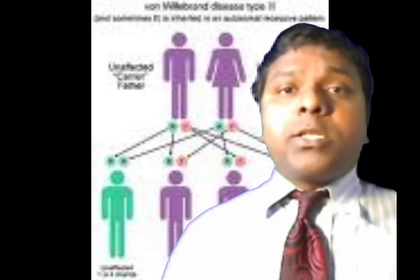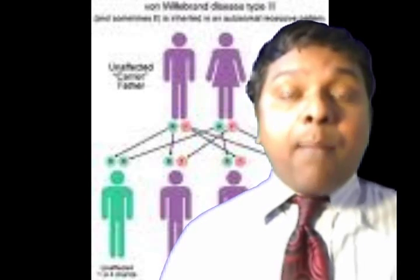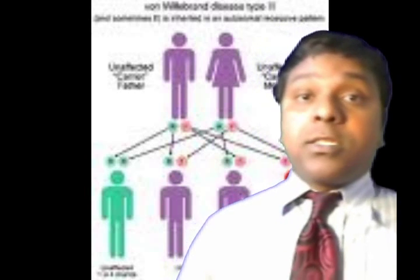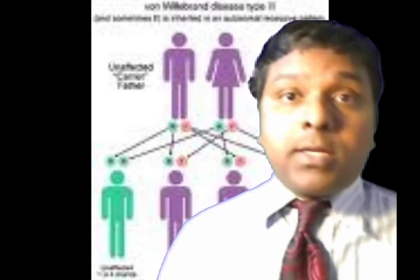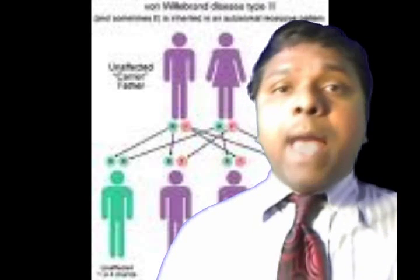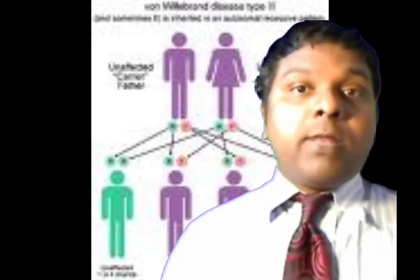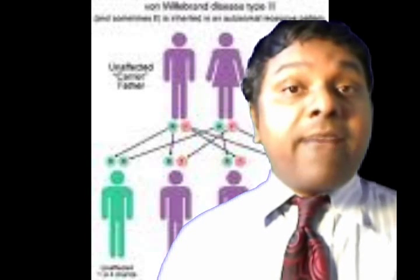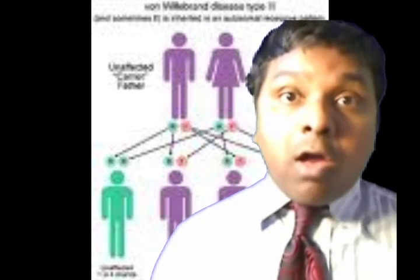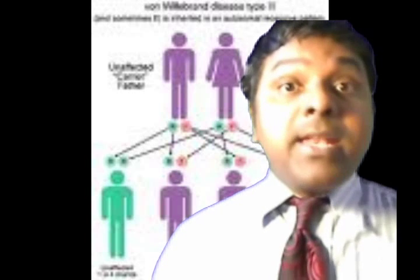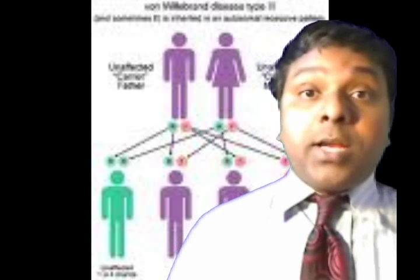In these patients you should avoid drugs like aspirin, NSAIDs, antiplatelet agents, heparin, and some antibiotics, because these patients are very prone to bleeding. Common lab abnormalities include prolonged bleeding time, sometimes low or normal von Willebrand factor, and low von Willebrand factor activity. PT is usually normal and factor 8 is also usually normal.